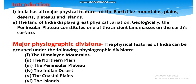The next topic is major physiographic divisions. The physical features of India can be grouped under the following physiographic divisions: the Himalayan mountains, the northern plain, the peninsular plateau, the Indian desert, the coastal plain and the islands.